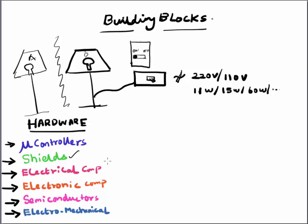Then you have the electrical components like resistors, then you have electronic components like capacitors. You have semiconductors which are basically your transistors, and then you have electromechanical devices like relays which actually control the light.